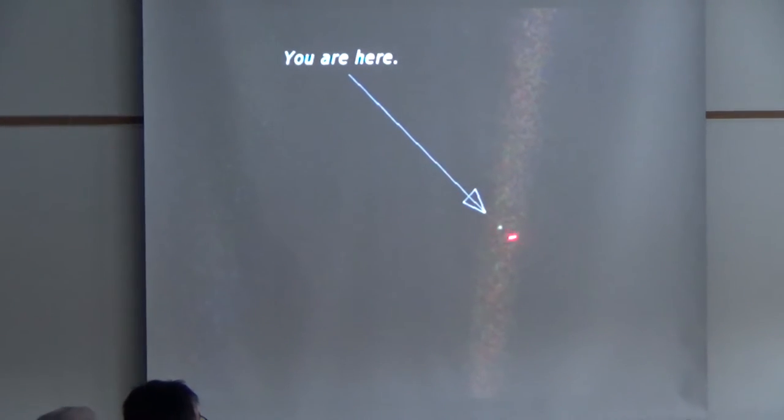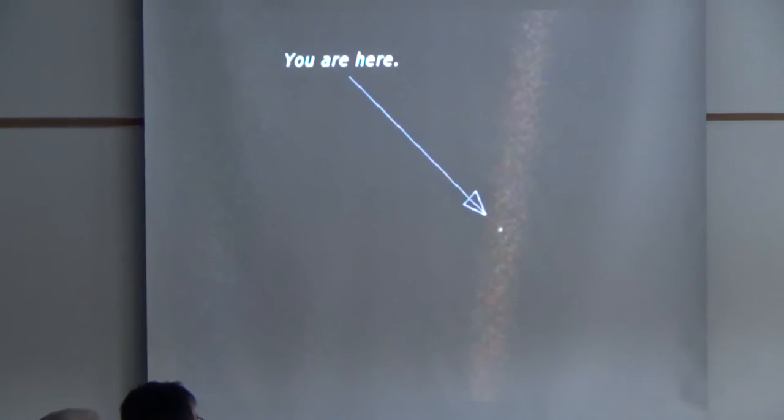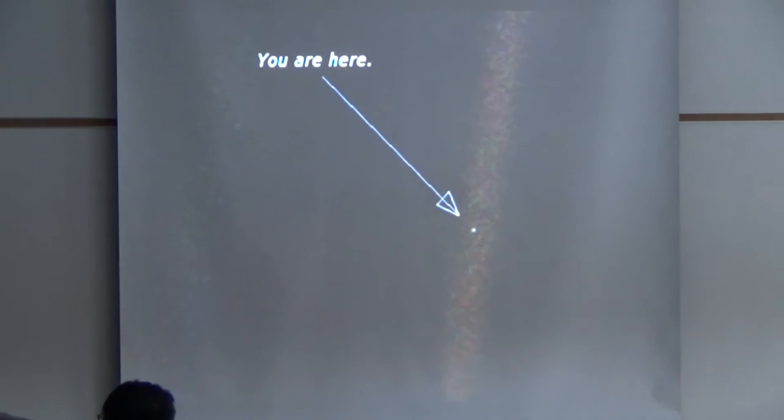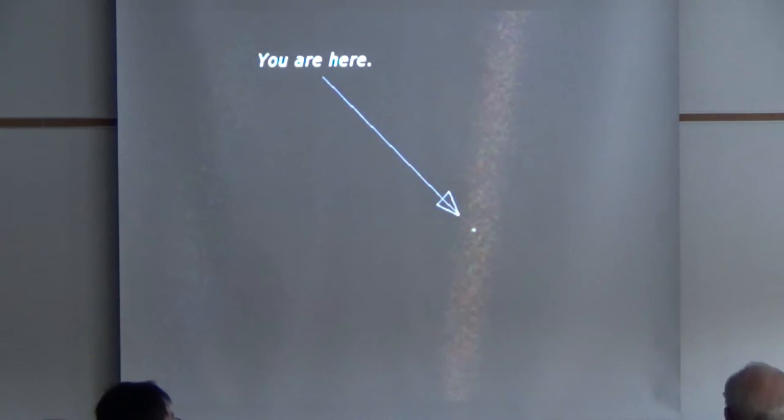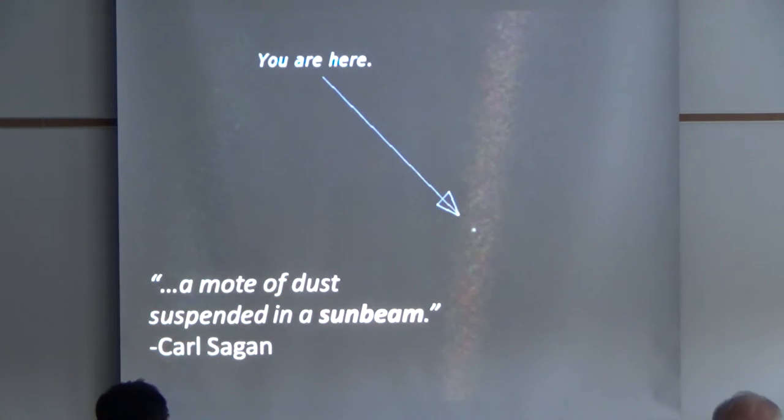I'm going to begin by showing you an image that some of you may find familiar. This little cluster of pixels is the Earth, as viewed from some cosmic distance. This was made famous by Carl Sagan. Happy birthday, Ben. Carl Sagan, in the Pale Blue Dot, famously writes: From this distance, the Earth is a mote of dust suspended in a sunbeam.